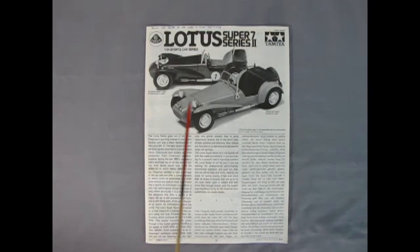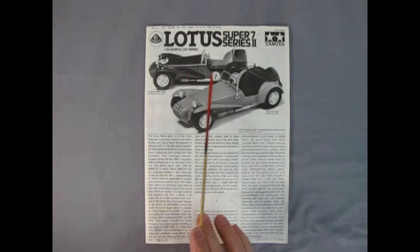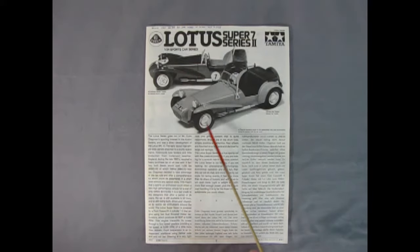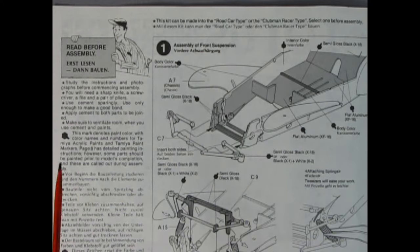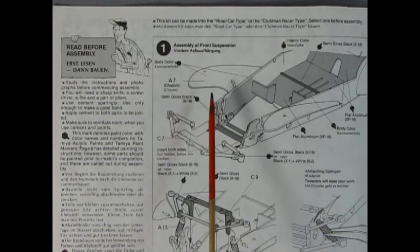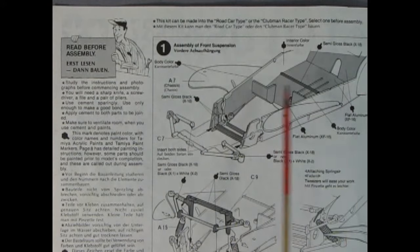As we look at the instructions, of course we've got a sports car version that you could build of this kit as well as the regular street version. And down below is the entire history of the Lotus 7. The one thing that makes the Lotus Super 7 Series 2 different from the original Lotus Super 7 Series 1 are these sweeping front fenders.